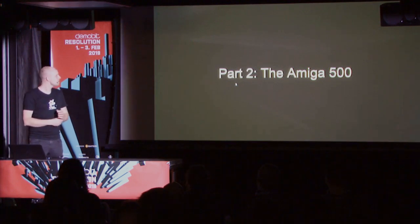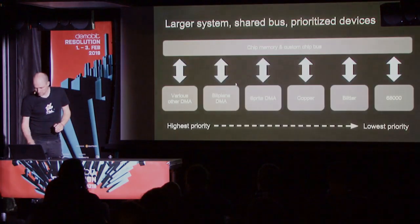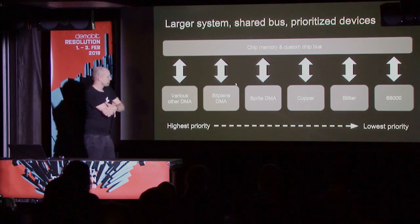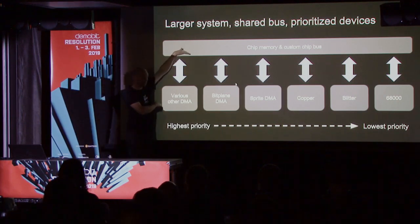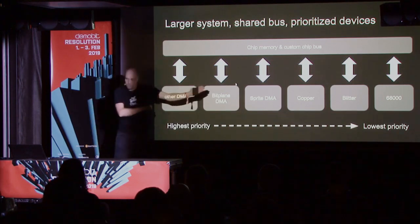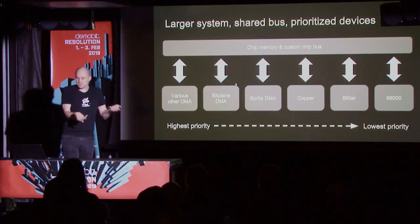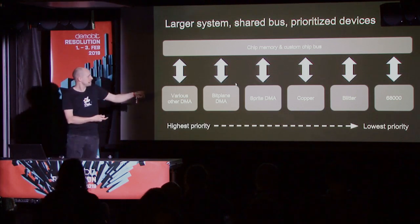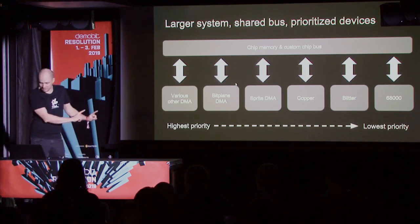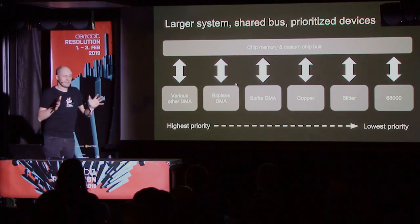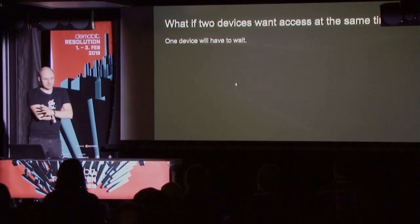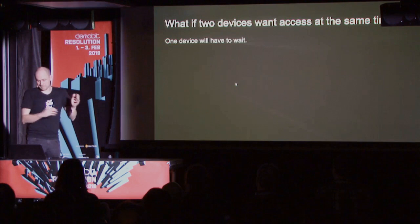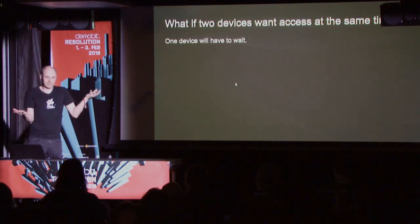Now let's look at the Amiga 500 system. The big difference in the 500 is it's no longer just a 68000. Up here you have chip memory and the custom chips — all these different devices in the system want to be able to access the custom chip registers and read and write memory. The way it's been set up is that the processor has absolutely lowest priority. Each of these devices may at any time want to do a memory access, so if two devices want to access at the same time, one will have to wait. The big difference in the Amiga 500 compared to the pure 68K example is that sometimes the 68K processor will be blocked by other devices.